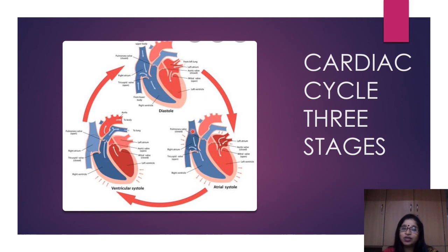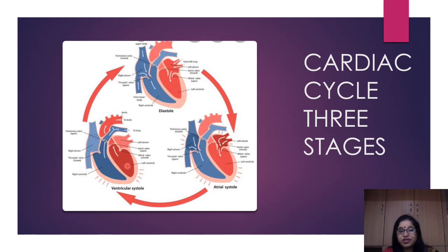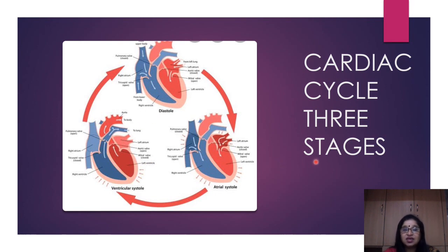The SA node then sends its impulse, causing the atria to contract — atrial systole — pushing blood with more force into the ventricles. Once the ventricles fill to capacity, the tricuspid and bicuspid valves close to prevent backflow into the atria. During ventricular systole, the semilunar valves of the pulmonary artery and aorta open: deoxygenated blood from the right ventricle flows into the pulmonary artery toward the lungs, while oxygenated blood from the left ventricle flows into the aorta for systemic circulation.